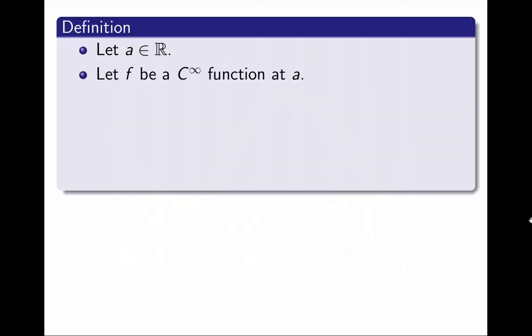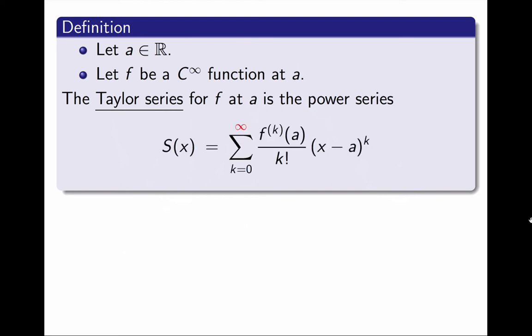Here is the definition. Given a C^∞ function f at a point a, the Taylor series for f at a is the power series, centered at a, given by this formula. It is the same formula I had before, but instead of stopping at degree n, I keep adding terms of all degrees. This formula basically means that all the derivatives of the power series at a are the same as the derivatives of f at a. Notice that a Taylor series, like all power series, only makes sense wherever it is convergent, in its interval of convergence.